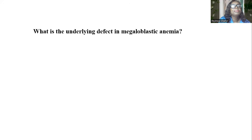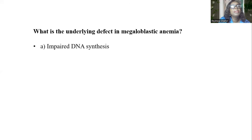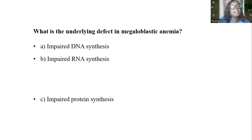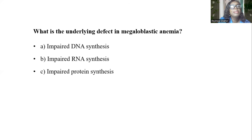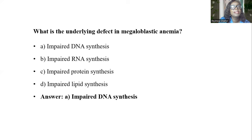What is the underlying defect of megaloblastic anemia? A, impaired DNA synthesis. B, impaired RNA synthesis. C, impaired protein synthesis. D, impaired lipid synthesis. The answer is A, impaired DNA synthesis.